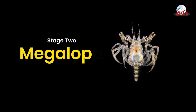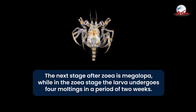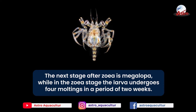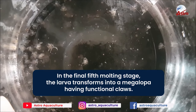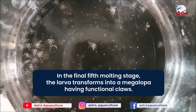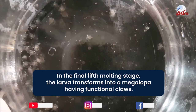Stage 2: Megalopa. The next stage after zoea is megalopa. While in the zoea stage, the larva undergoes 4 moltings over a period of 2 weeks. In the final 5th molting stage, the larva transforms into a megalopa having functional claws.